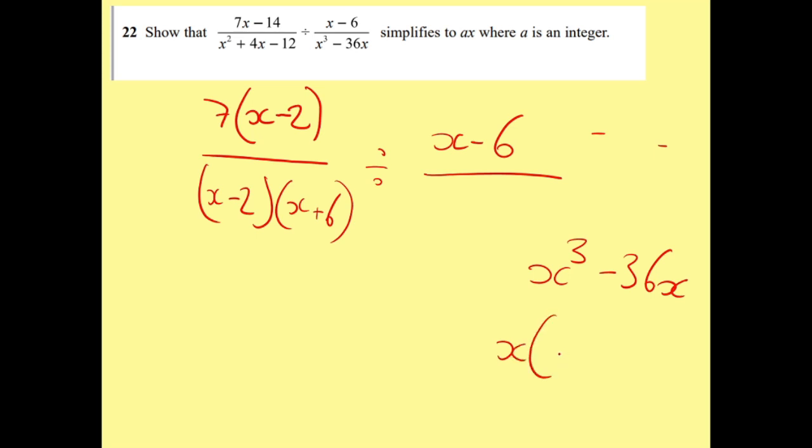First of all, I can take x out, which brings x squared minus 36. And don't think that's done because x squared minus 36 is not fully factorized. That's difference of two squares.